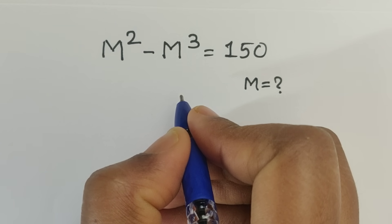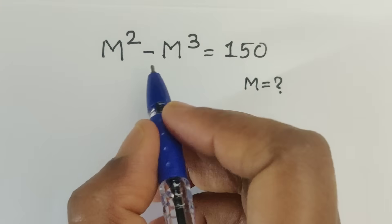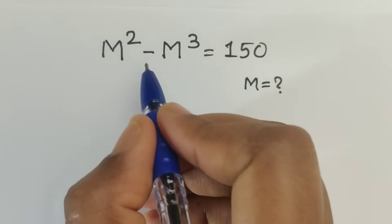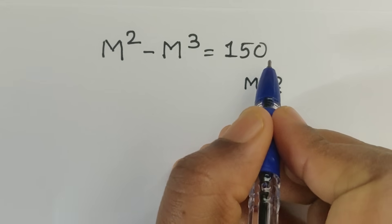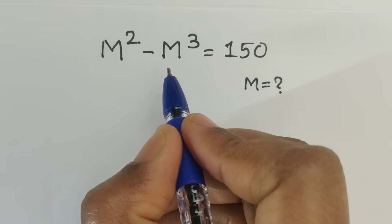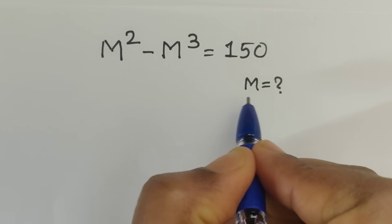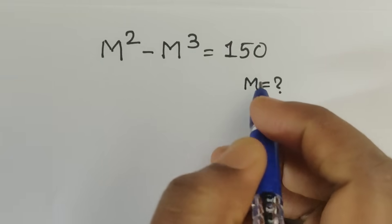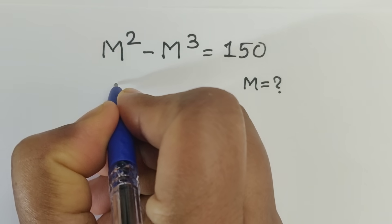Hello everyone, welcome back to our channel. Here we have one question: m squared minus m cubed equals 150. In this problem we have to find the value of m. So how do we solve this problem? Let's see.